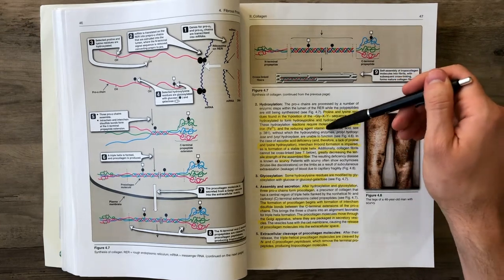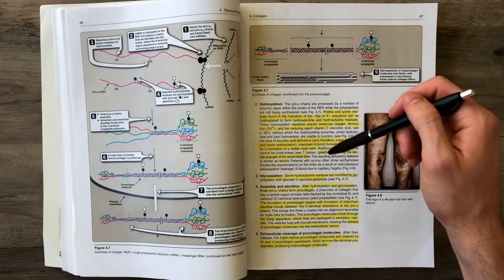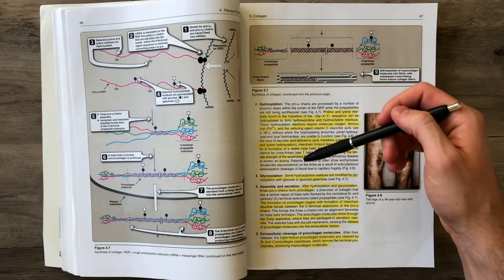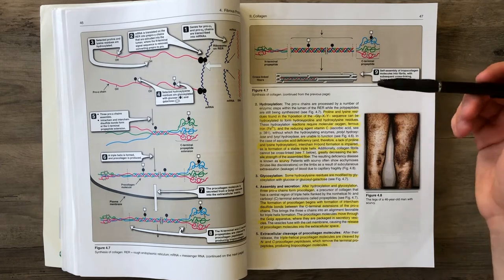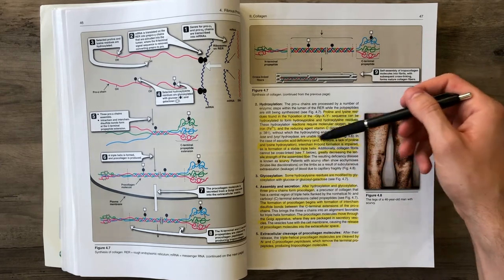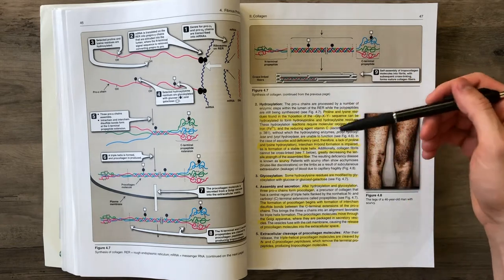Vitamin C deficiency results in a disease called scurvy, which plagued pirates back in the day because they didn't have vitamin C sources on their ships until they started taking oranges and other fruits containing vitamin C to prevent scurvy.